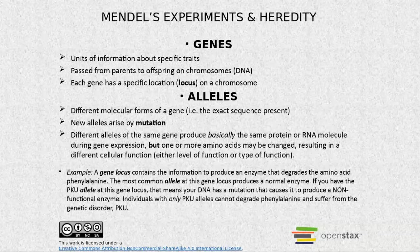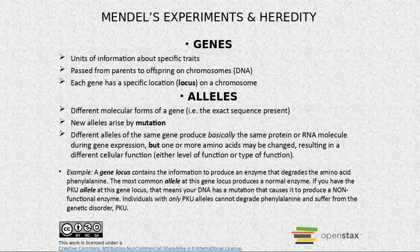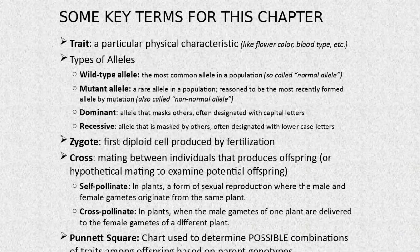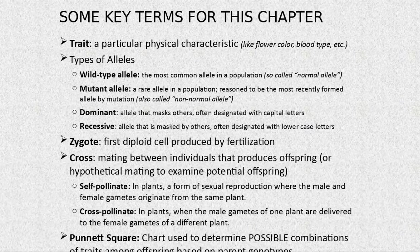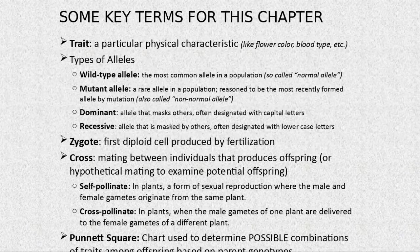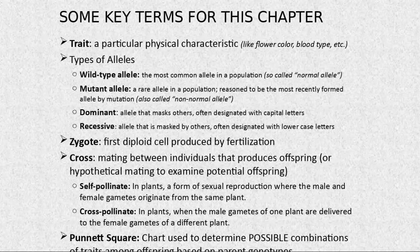Dominant alleles mask others and we represent them with capital letters. Recessive alleles are the ones masked by the dominant and are often designated by lowercase letters. The normal allele is the most common allele in any population, and mutant alleles are the ones that are not normal — the most recently formed, created by mutations.